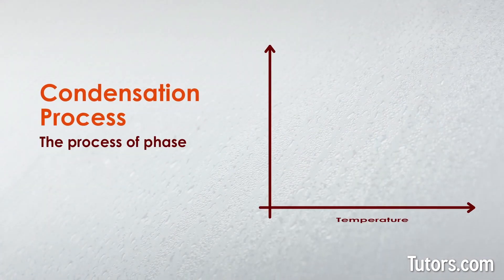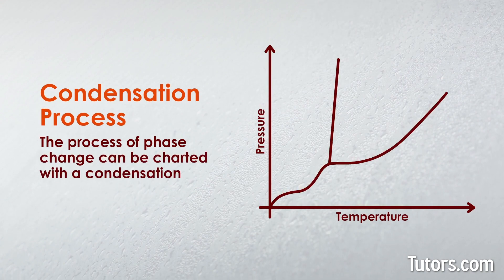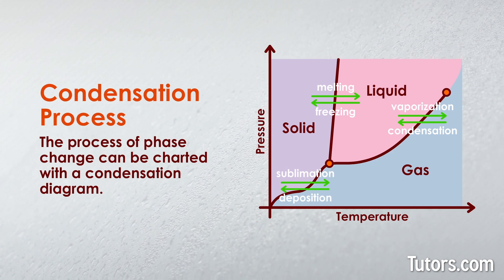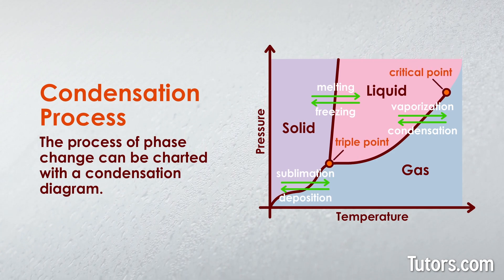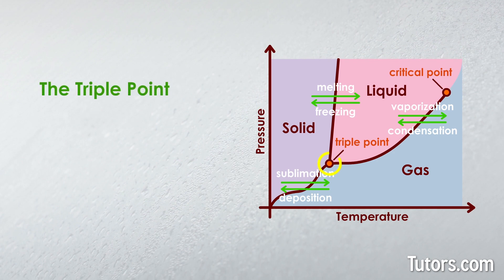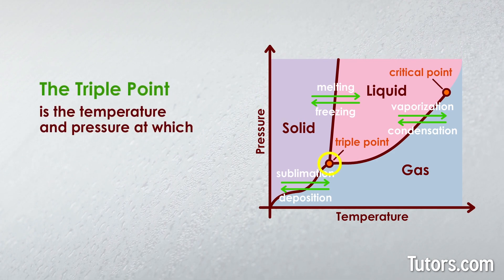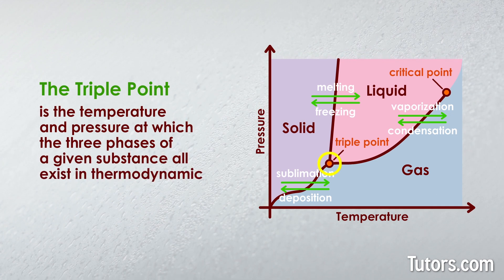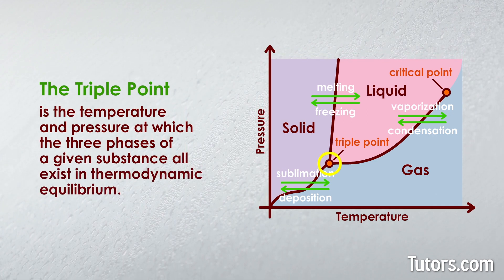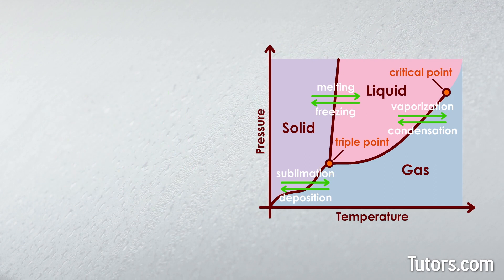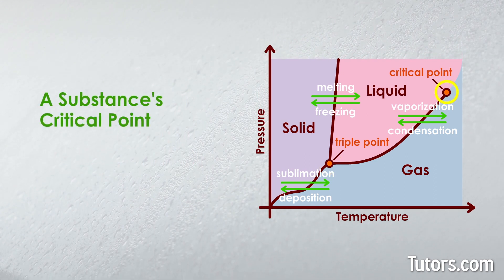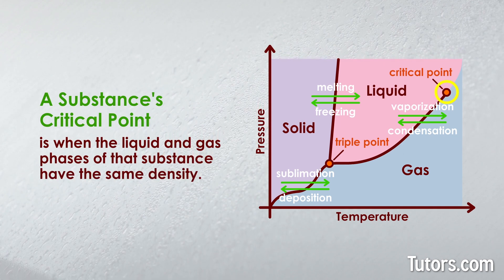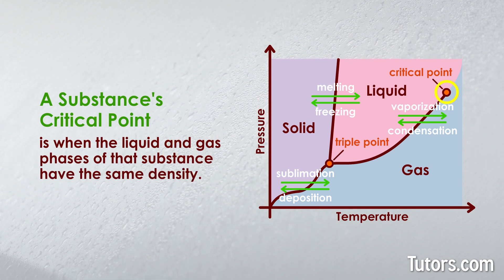The process of phase change can be charted with a condensation diagram, such as this one. Two notable spots on the diagram are the triple point and critical point. The triple point is the temperature and pressure at which the three phases of a given substance all exist in thermodynamic equilibrium at the same time. A substance's critical point is when the liquid and gas phases of that substance have the same density — they are indistinguishable from each other.